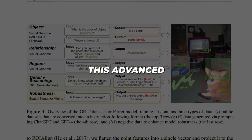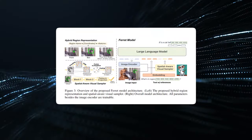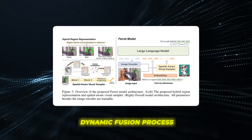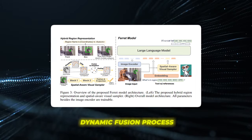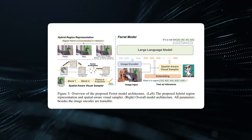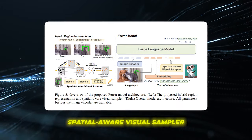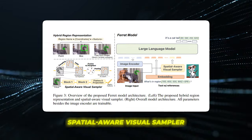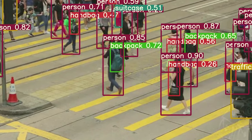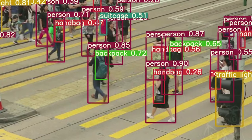But how does Ferret achieve this advanced scene understanding? The key lies in its novel dynamic fusion process. One encoder focuses solely on the visual data, the other handles the textual input. The spatial-aware visual sampler then smartly blends these dual streams of information. This balanced assimilation of both modalities enables Ferret's unprecedented performance.